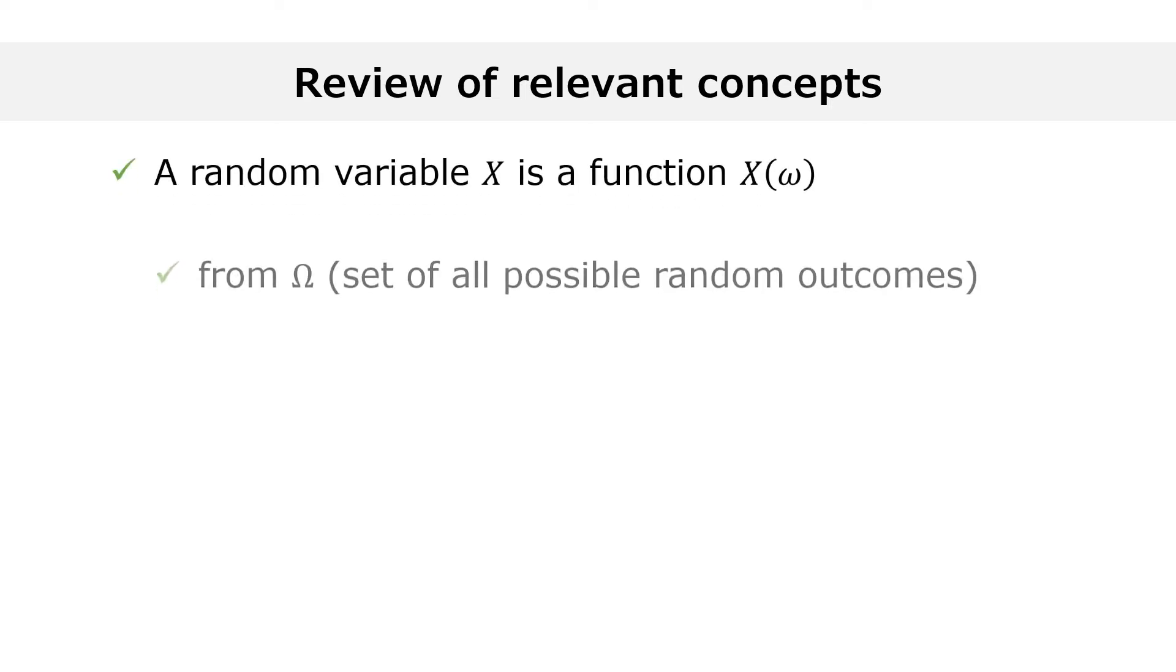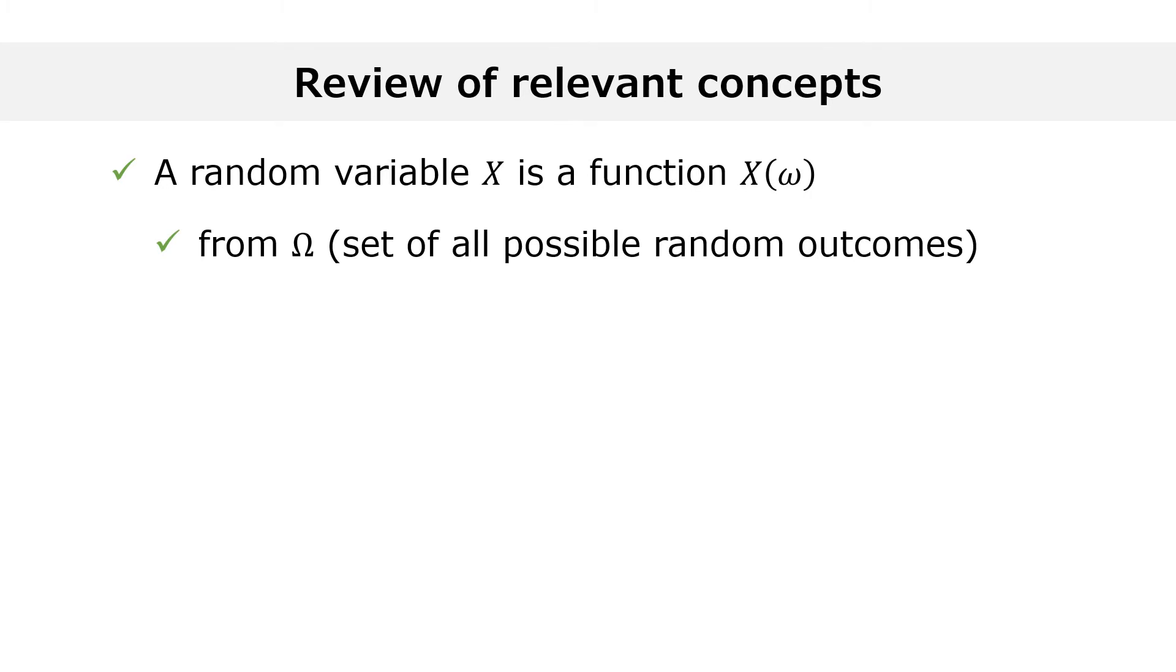In order to fully understand indicator functions, you need to remember how random variables are defined. A random variable is a function from the set omega of all possible random outcomes to the set of real numbers. In other words, a random variable is a function that associates numbers to random outcomes.